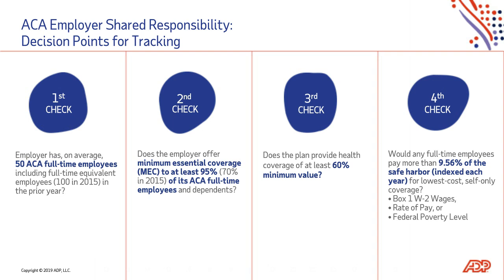Check two: have you offered benefits defined with minimum essential coverage to at least 95% or more of your defined full-time employees? This is known as the MEC threshold and drives whether or not you're at risk of being assessed a penalty based on IRS Code Section 4980H, also known as the big penalty.